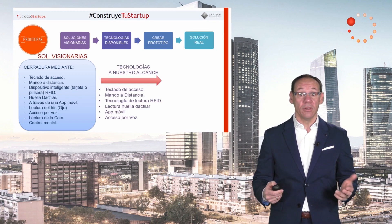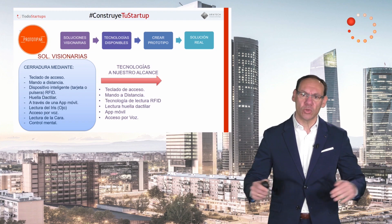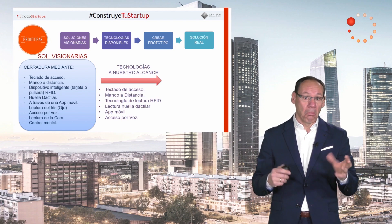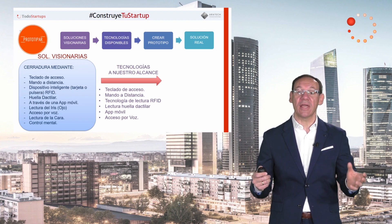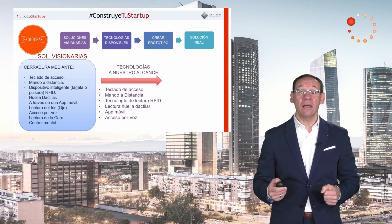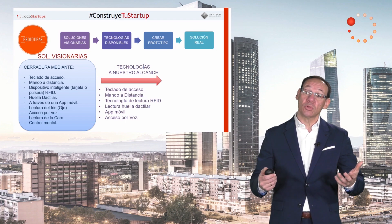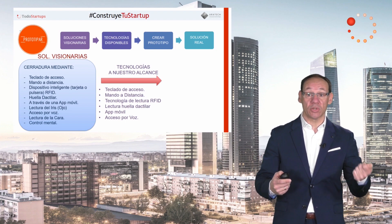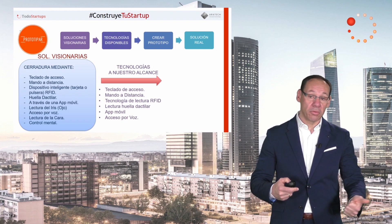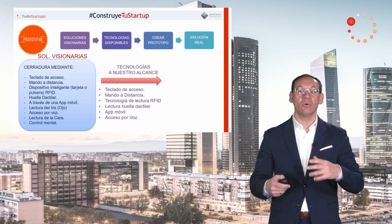En nuestro caso práctico, para nuestro primer prototipo no es necesario que construyamos la cerradura definitiva y toda una aplicación móvil para su control. Bastará con crear, por un lado, una aplicación muy sencilla en la que podamos utilizar el altavoz mediante una orden ya pregrabada, el lector de huella y el teclado de nuestro smartphone. Y por otro lado, contar con un chip de lectura RFID a distancia vinculado a nuestro smartphone, de tal forma que al emitir una orden desde la aplicación — mediante voz, leyendo la huella o introduciendo un pin — este chip nos muestre el estado de abierto o cerrado.